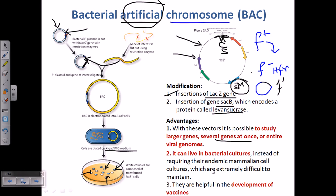BACs are also helpful in vaccine development and antibiotic development. They are a blessing to molecular biologists for cloning large chunks of DNA in bacterial cells. Similarly, YACs are also important for cloning large segments of DNA in eukaryotic systems. Together, these vectors provide options for cloning in both prokaryotic and eukaryotic systems.